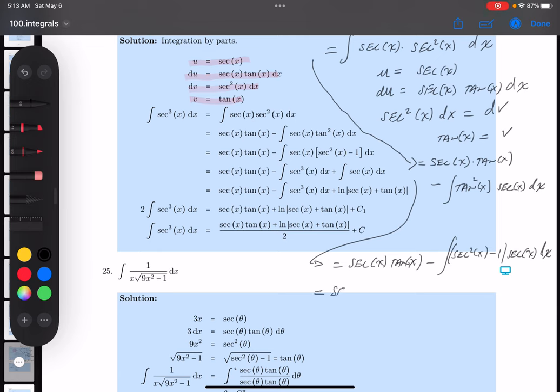And we get secant x tan x. Again, I want to remind you this is equal to secant cubed. It's going to be minus, I'm starting to see something now, I'm seeing minus secant cubed, and then plus secant x dx.